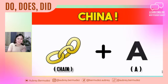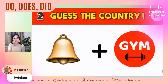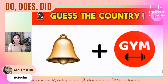Next one — we have a picture of a bell and the word 'Jim.' What country do you think that is? The first correct answer came from Mechman. Congratulations — it's Belgium! Don't forget to always write the name of any country with a capitalized letter. The correct answer is Belgium.